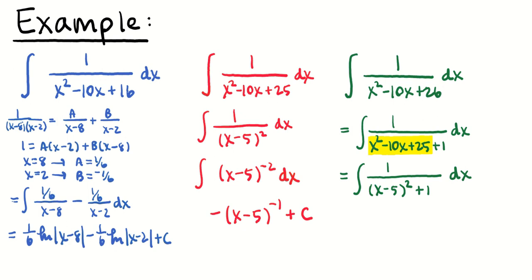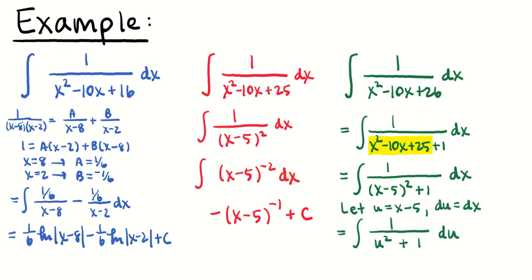Using u = x − 5 so that du = dx, we get 1 over (u² + 1), or equivalently 1 over (1 + u²). Hopefully you recognize that as the derivative of a function on our list — the antiderivative of 1/(u² + 1) is inverse tangent of u. Since u = x − 5, this equals inverse tangent of (x − 5) + c.